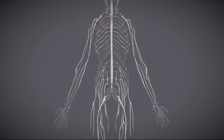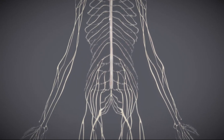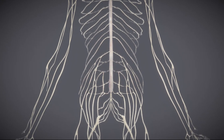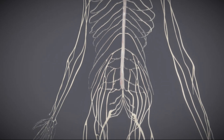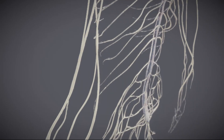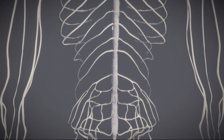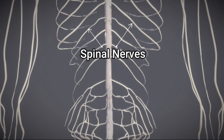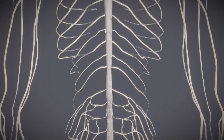The peripheral nervous system is made up of nerves. The nerves can be spinal nerves and cranial nerves. The spinal nerves connect the spinal cord to the organs, and there are 31 pairs of spinal nerves.